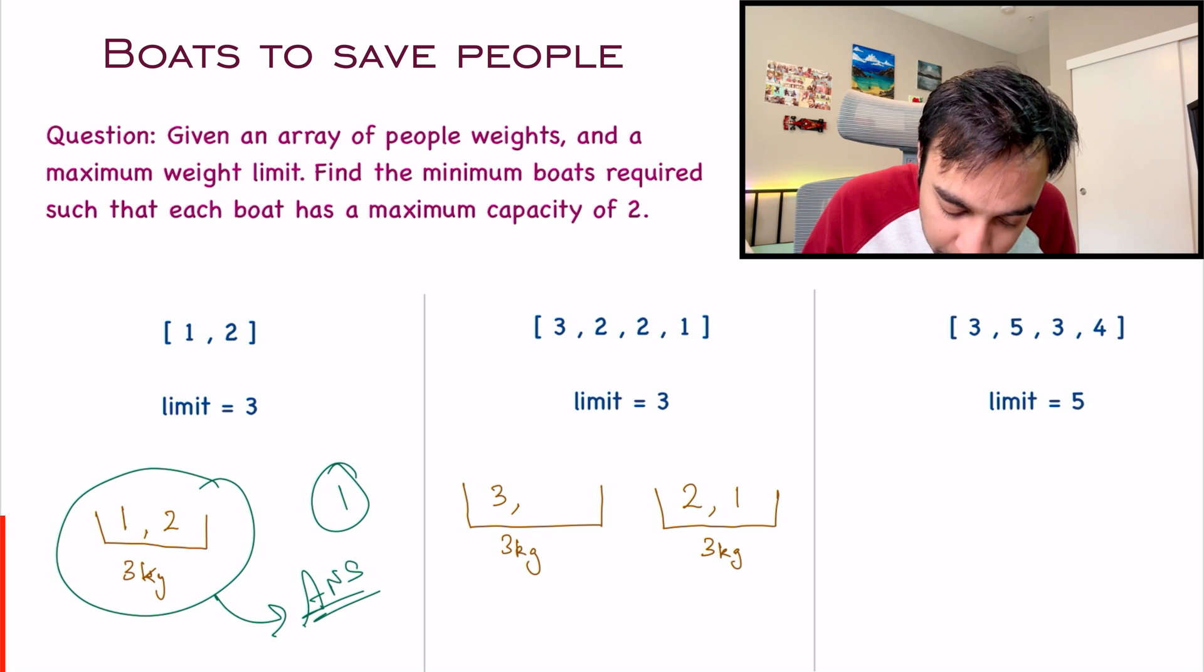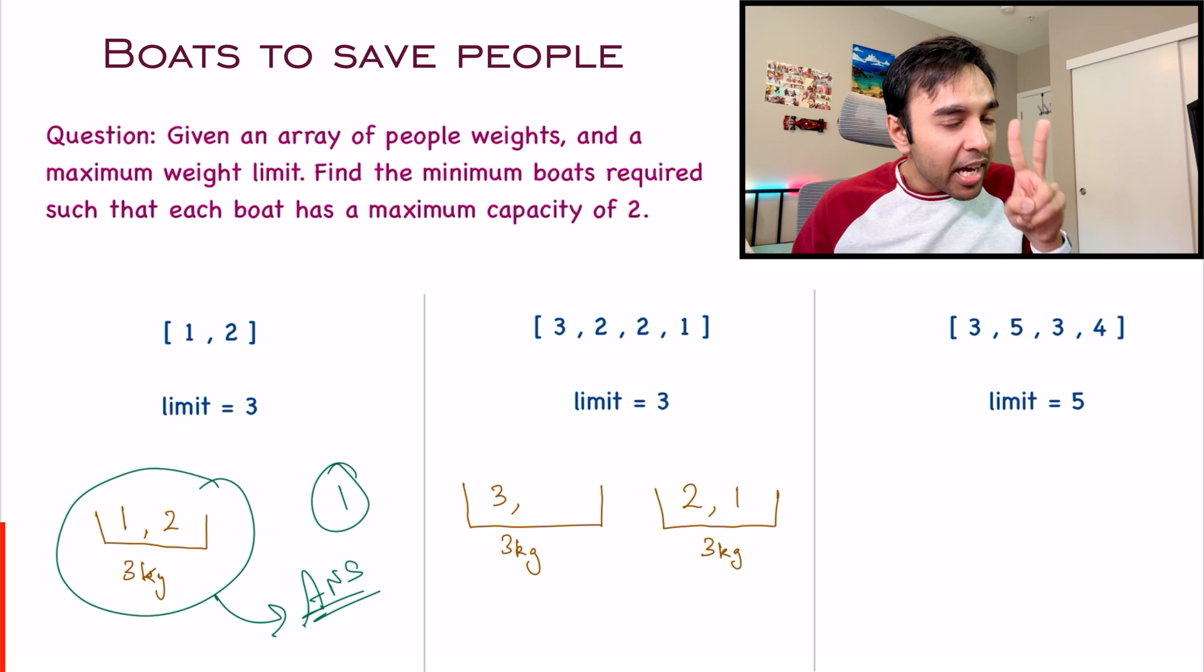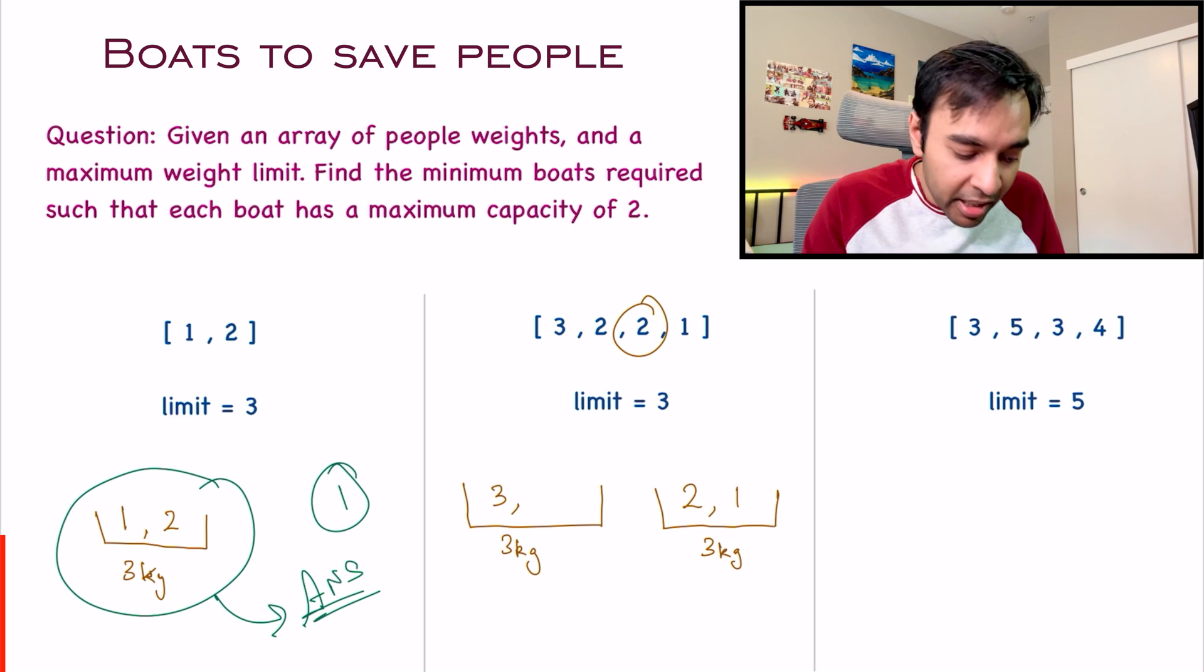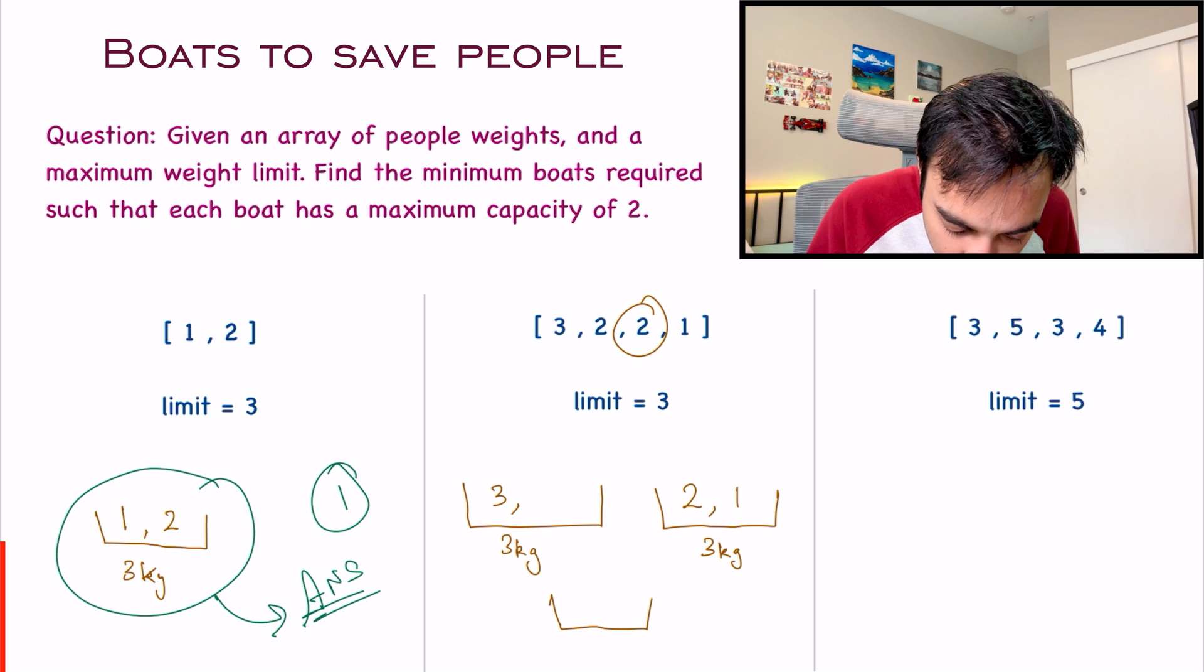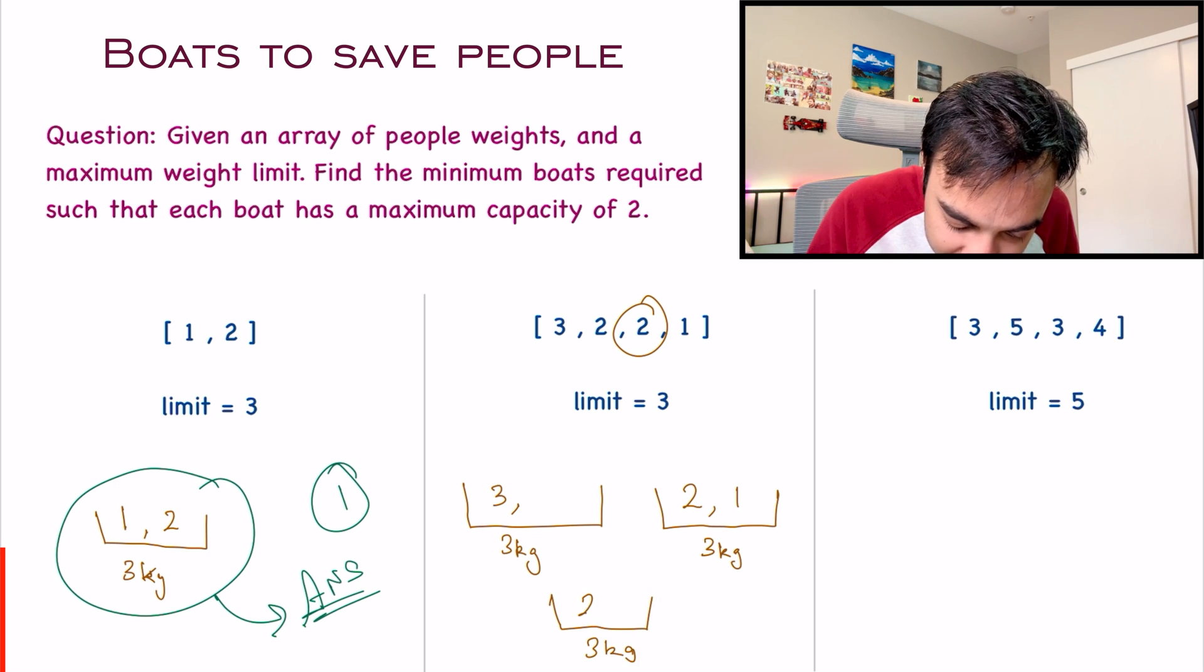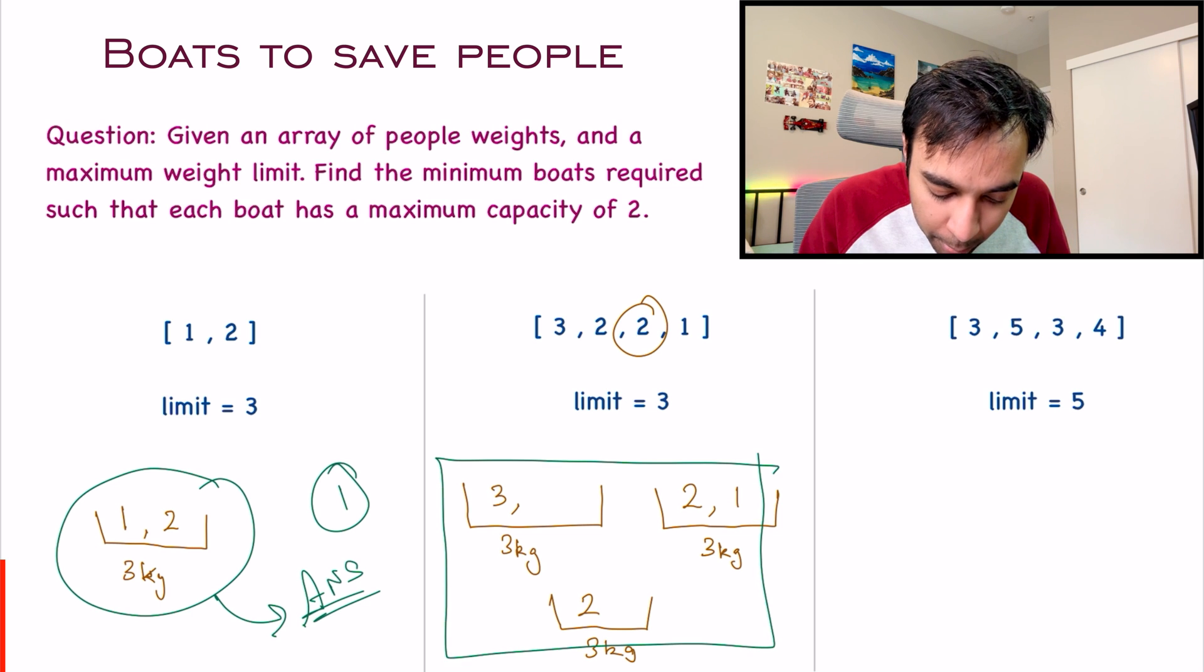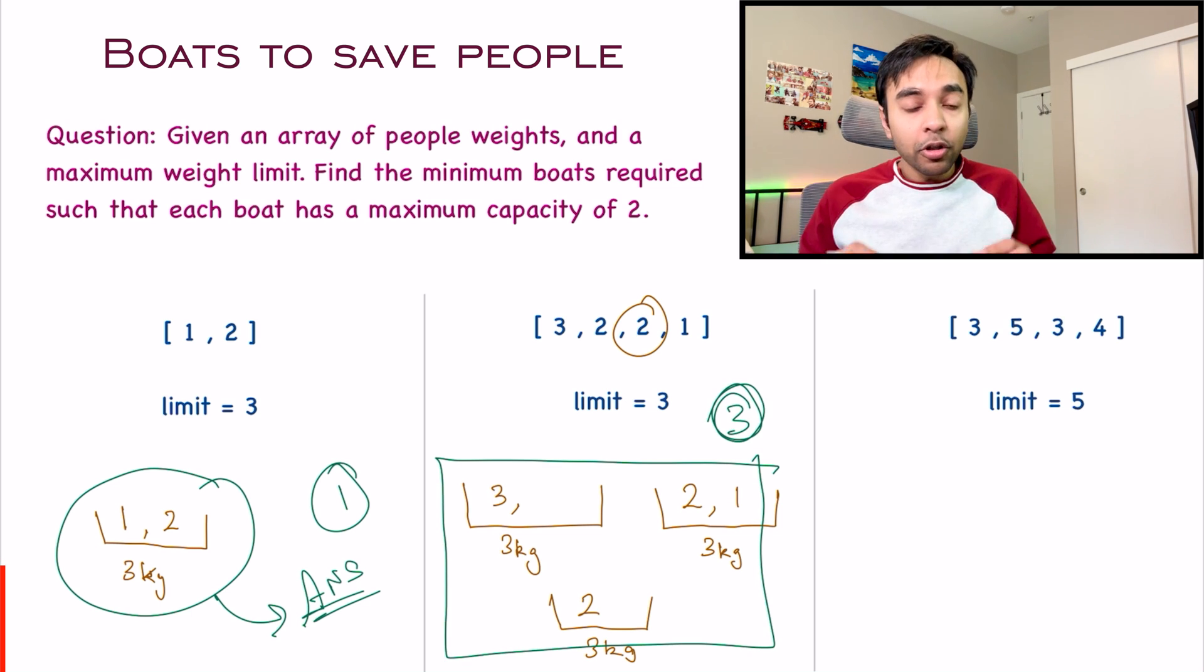This becomes one scenario. I have used 2 boats but I have one person remaining. I will take one more boat and this person sits here. This time, you need a minimum of 3 boats. For your second test case also, 3 is the answer.